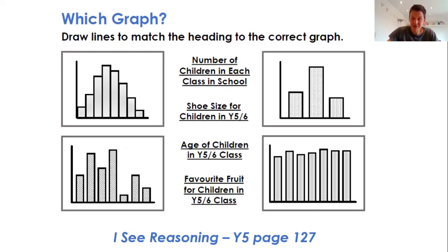And the kind of points that I might raise, the number of children in each class will be relatively similar between class to class. That's more likely to be the bottom right example. Shoe size for children in year five and six, generally, few children will have smaller feet. There'll be more in the middle, and then fewer will have larger feet.